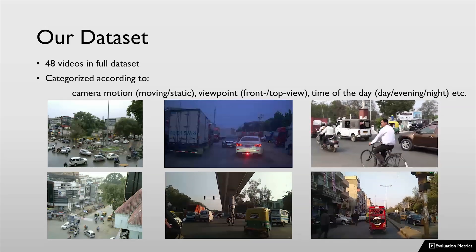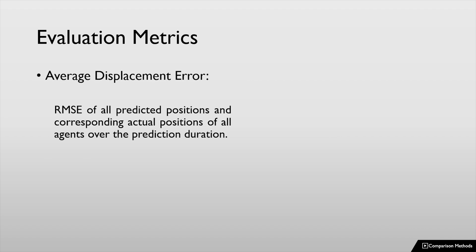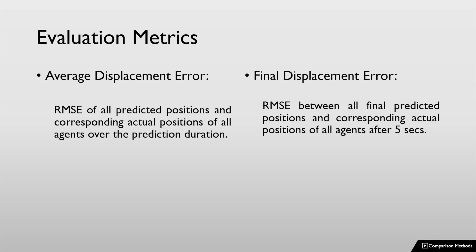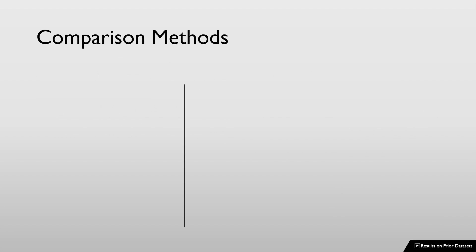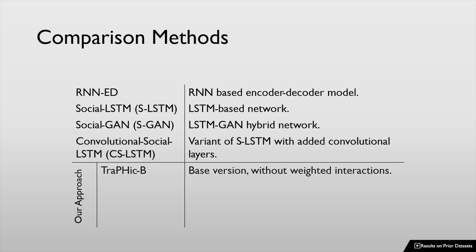For evaluation, we observe three seconds of trajectory history and predict the next five seconds. We use standard metrics to measure the performance of algorithms used for predicting the trajectories of road agents. We compare our algorithm with the following methods and use four variants of our approach.